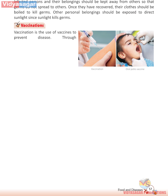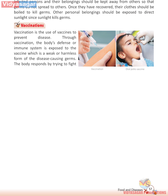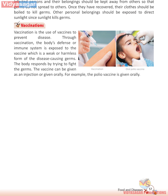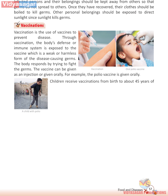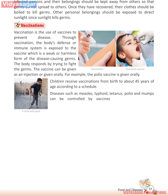Vaccinations — vaccination is the use of vaccines to prevent disease. Through vaccination, the body's defense or immune system is exposed to the vaccine, which is a weak or harmless form of the disease-causing germs. The body responds by trying to fight the germs. The vaccine can be given as an injection or given orally — for example, the polio vaccine is given orally. Children receive vaccinations from birth to about 5 years of age according to a schedule. Diseases such as measles, typhoid, tetanus, polio, and mumps can be controlled by vaccines. Vaccination helps in immunization, i.e., it protects children from harmful infections before they come into contact with them.